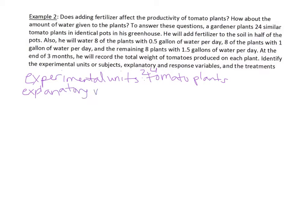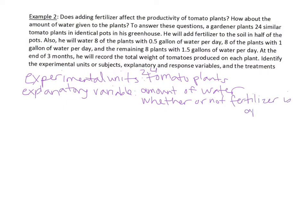There are actually two explanatory variables here: the amount of water and whether or not fertilizer is applied. The amount of water is a quantitative variable, while whether or not fertilizer is applied is categorical. The response variable is the total weight of the tomatoes produced, which is quantitative — compared to the previous example where the response was categorical.